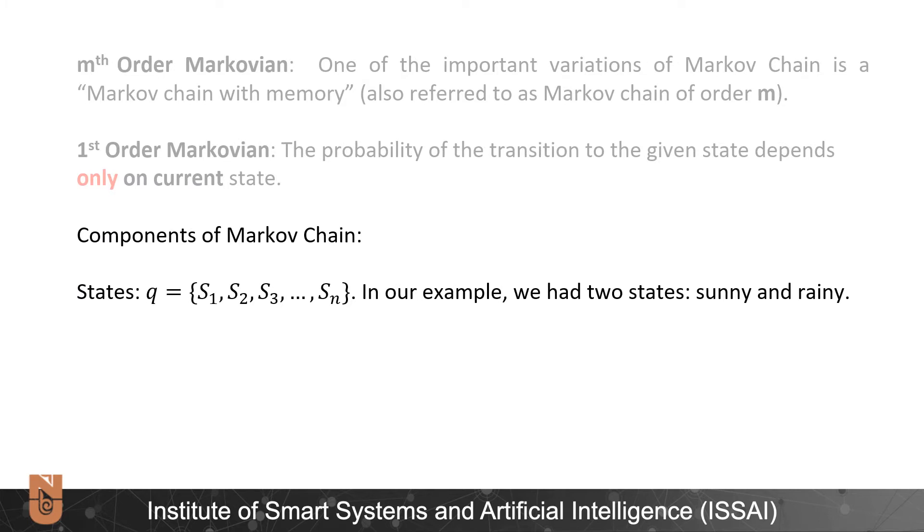Now let's have a look at the components of Markov chain. First thing is a set of states. Let us denote state as S. So we have S1, S2, S3 all the way up to Sn. In our example we had two states: sunny and rainy.